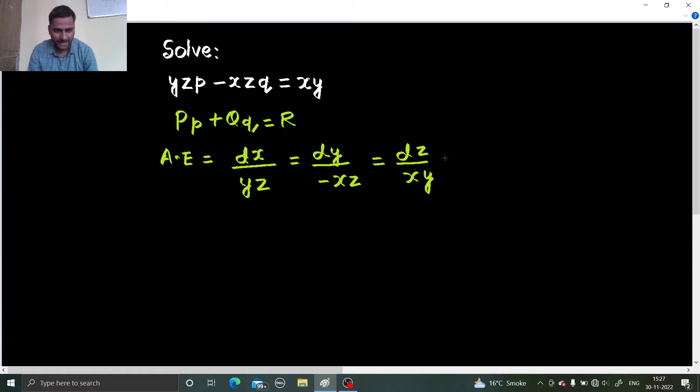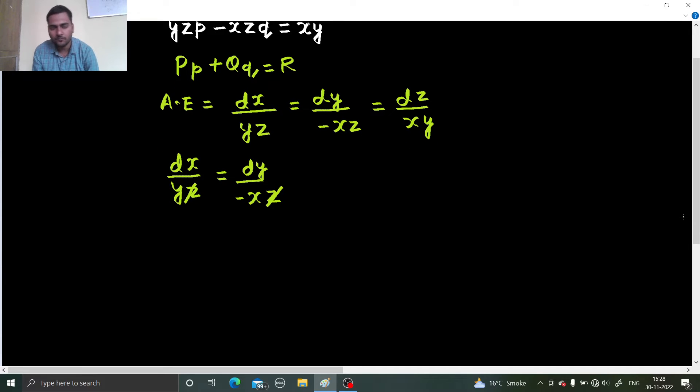Now, can we use method of grouping? I think so, at least for once. If we equate the first and the second one, I can see roughly that z is getting eliminated and I will be happy enough to get an equation from there. So if I see z is getting eliminated, that is why I wrote this otherwise I would have moved to multipliers.